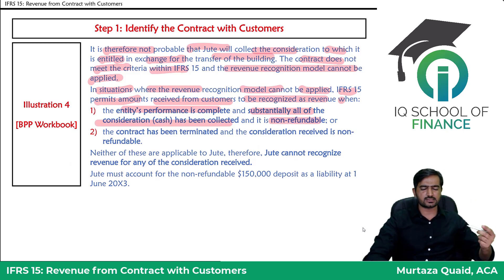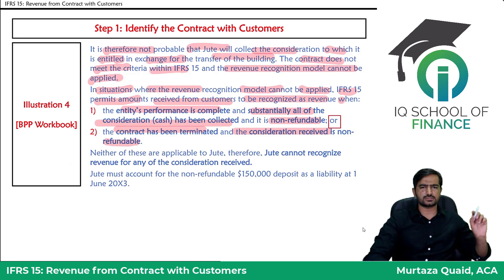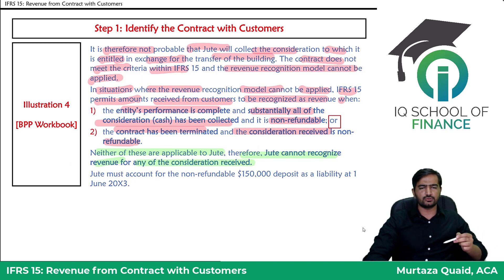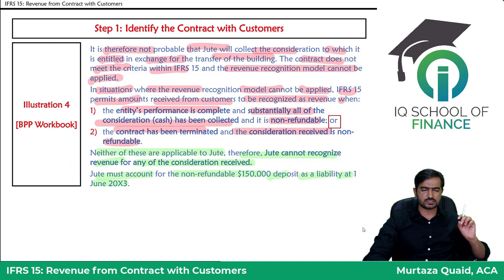Neither of these conditions applies to Jute. Therefore, Jute cannot recognize revenue for any of the consideration received. Since the event triggering revenue recognition has not occurred, Jute must account for the non-refundable deposit of 150,000 dollars as a liability at 1st June 2003. Even though the performance obligation of transferring the building has been satisfied and Jute has received the deposit, because the contract criteria are not met, the amount received must be recorded as a liability.